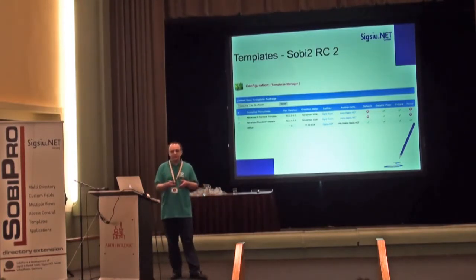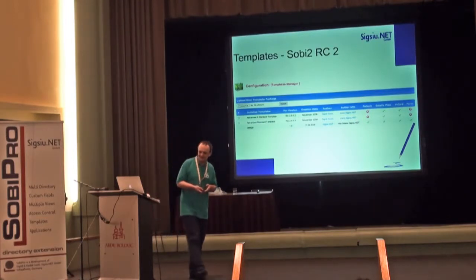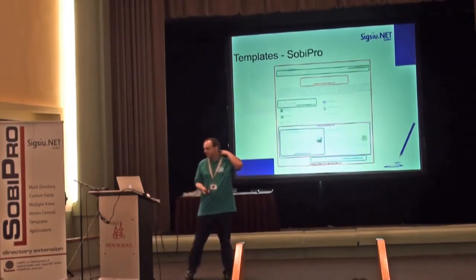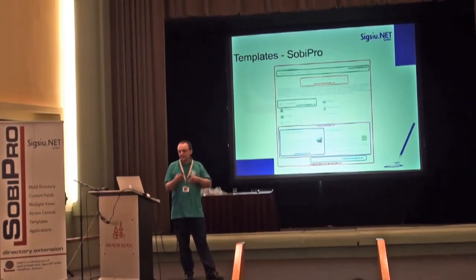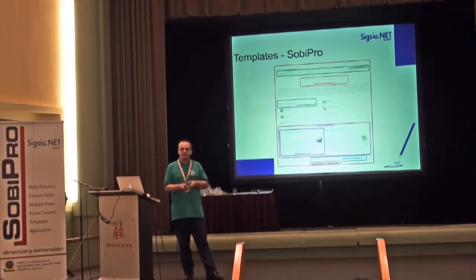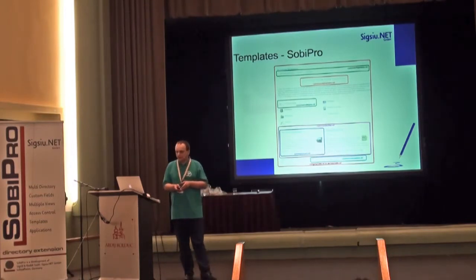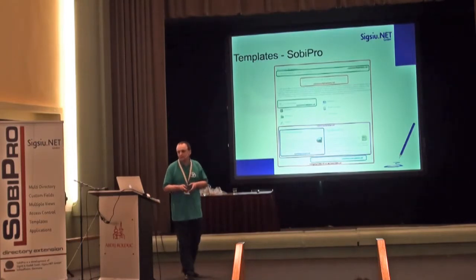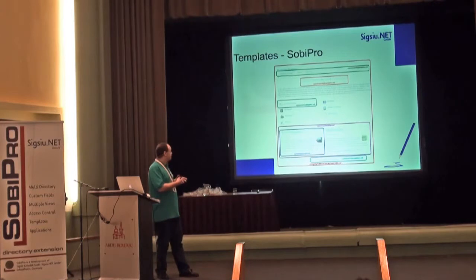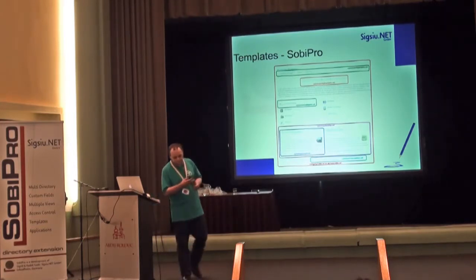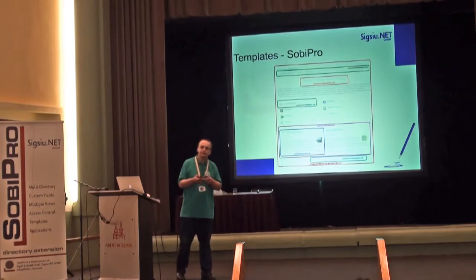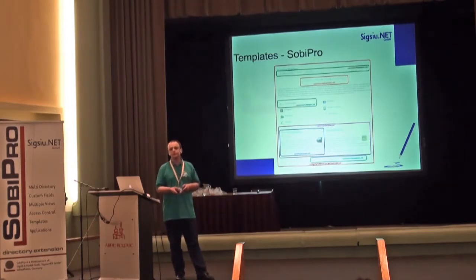But it was still not enough for users, which is not very surprising. So another major theme in Sobi Pro design was to be able to style literally every piece of component output — no matter which function, whether in list view, category view, entry form, or search function.